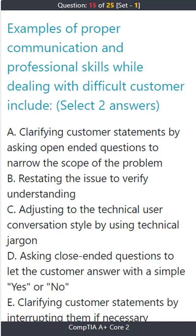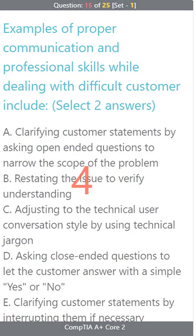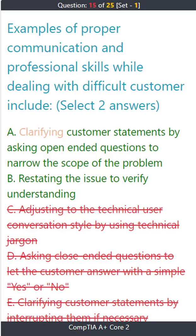Question 15: Examples of proper communication and professional skills while dealing with a difficult customer include — select two answers: A) Clarifying customer statements by asking open-ended questions to narrow the scope of the problem. B) Restating the issue to verify understanding. C) Adjusting to the technical user conversation style by using technical jargon. D) Asking close-ended questions for a simple yes or no. E) Clarifying customer statements by interrupting them if necessary. The correct answers are A and B.